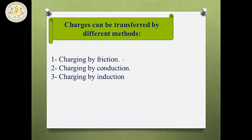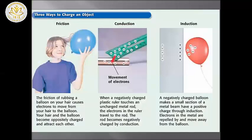How can charges be transferred? Charges can be transferred by different methods: by friction, by conduction, and by induction. We have three ways to charge an object. For friction, for example with a balloon and hair — it causes electrons to move from your hair to the balloon. Your hair and the balloon become oppositely charged, so they attract each other.